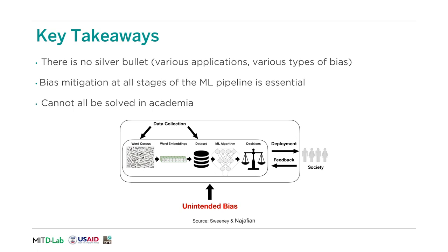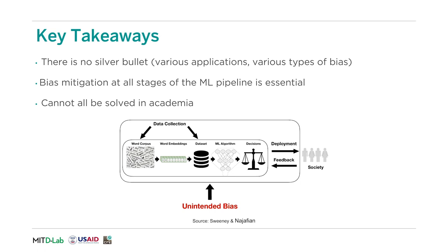To wrap up, we describe some key takeaways from this project. First, there is no silver bullet — there are many different types of applications and various types of bias to correct for when trying to make NLP systems more fair. Second, bias can emanate from any stage of the machine learning pipeline; therefore, having tools to identify and mitigate bias at all stages is essential. Finally, we focus on solving this problem within an academic context, but this cannot all be solved in academia — much of the unintended bias in the dataset could come from decisions made upstream in data collection.